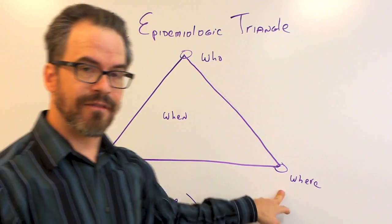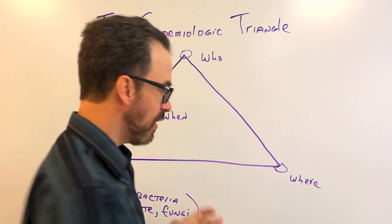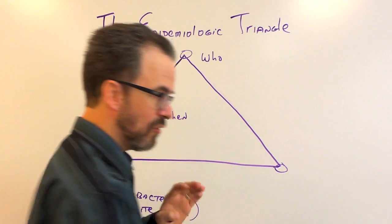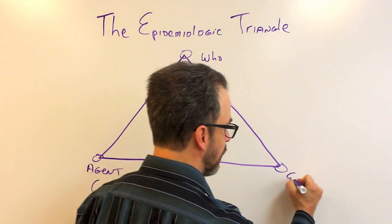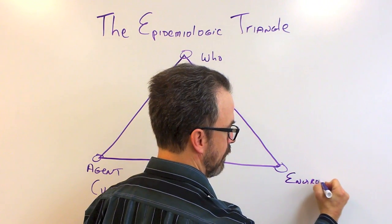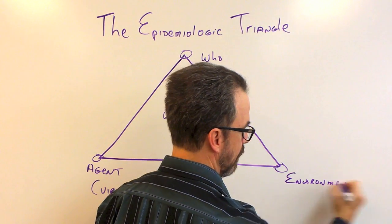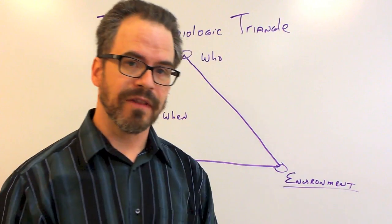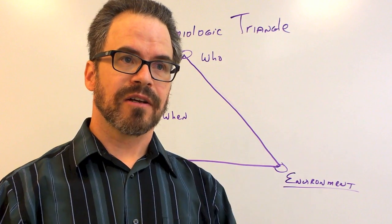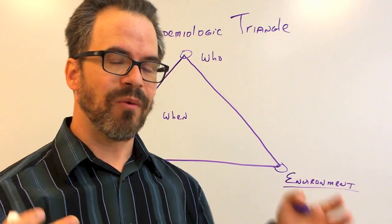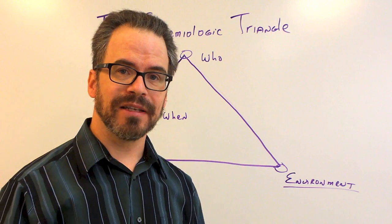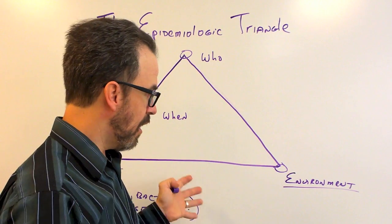In this corner we have the where. Where do diseases occur? Where do they live? So this is the environment. That's the environment of the disease. And it's not just considering what we think of as environment, but any place diseases can be.